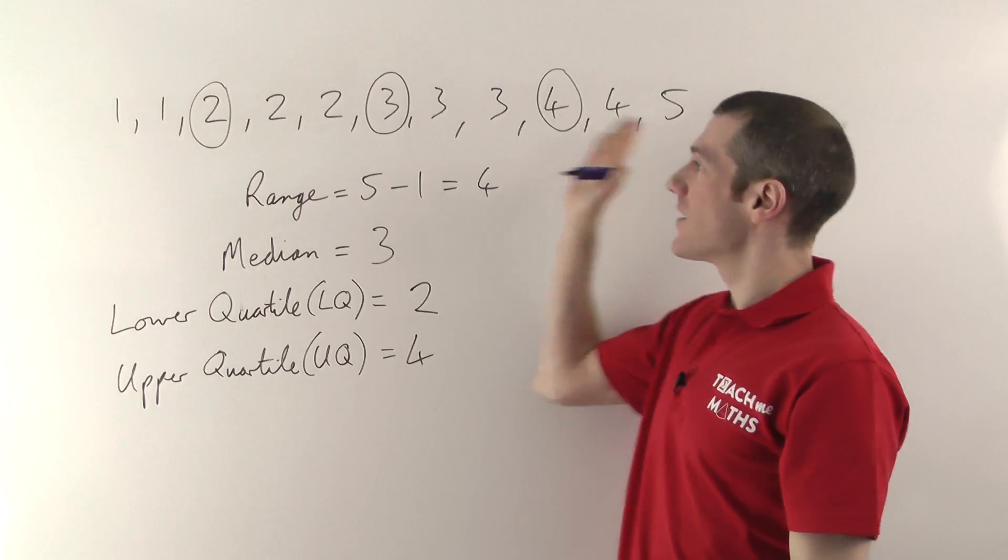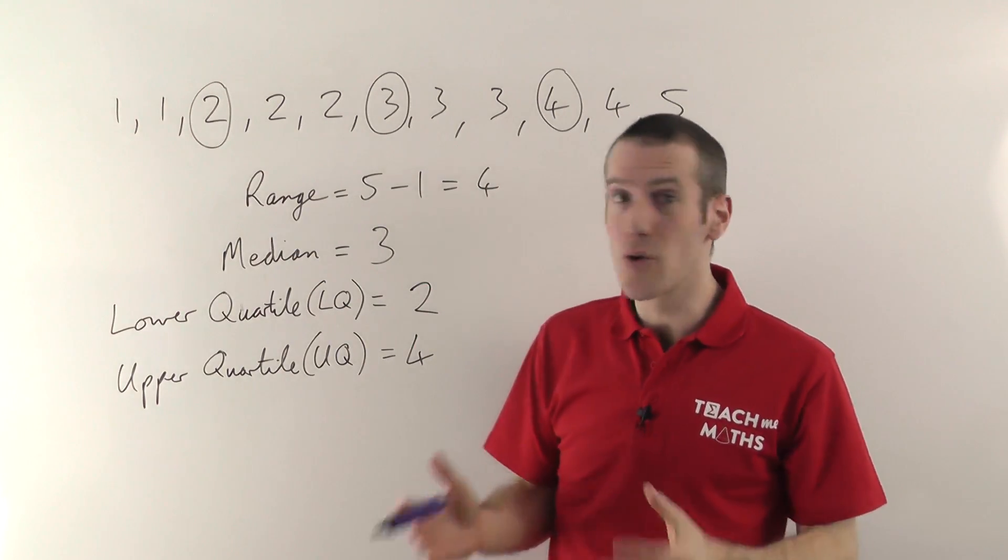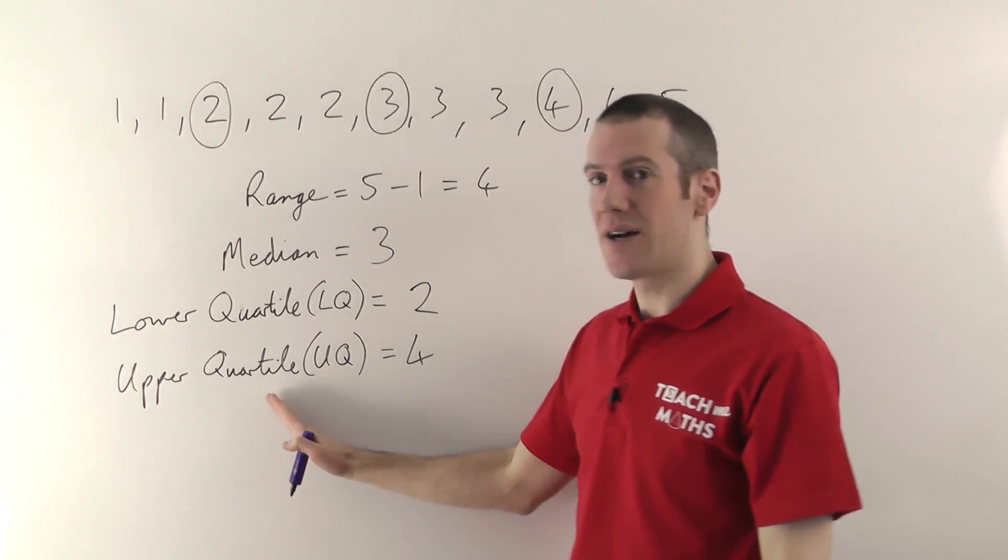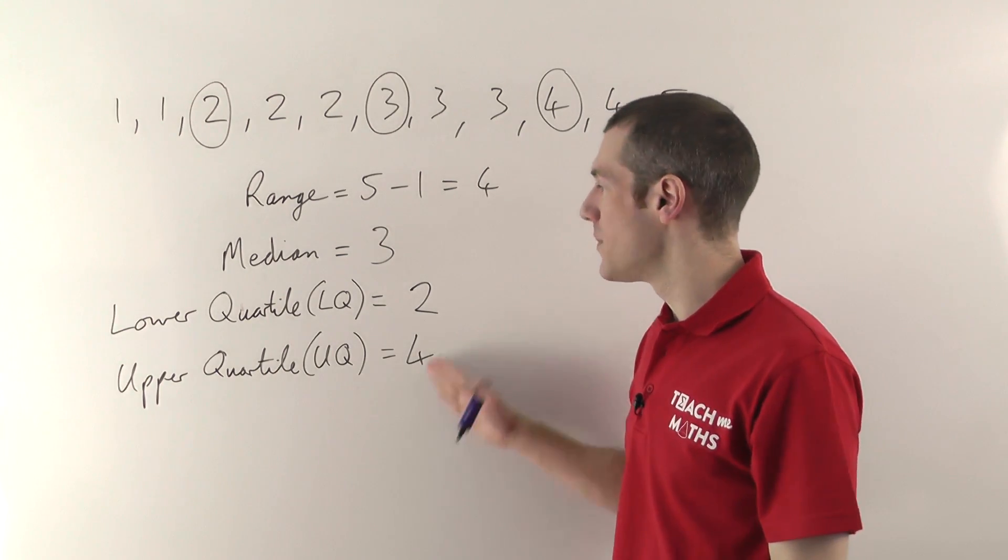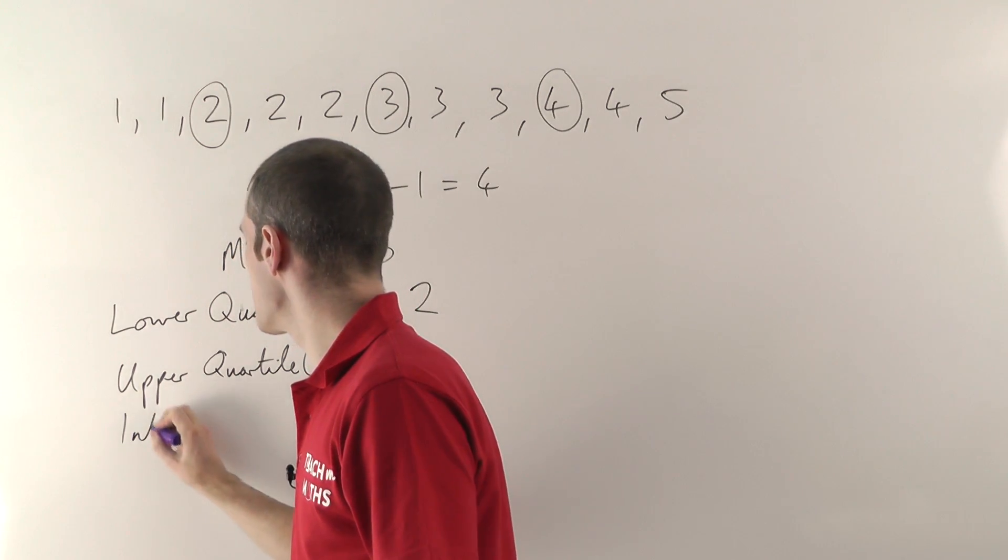Now if the range is the highest value minus the lowest value, the next thing we do is the interquartile range. Inter just means between, so it's the range between the quartiles. So it's simply the higher quartile minus the lower quartile. So that's very easy to work out.